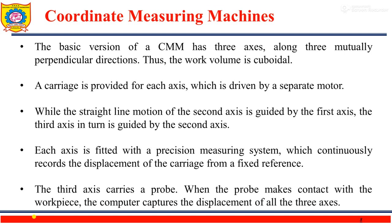The basic version of a CMM has three axes along three mutually perpendicular directions, so the work volume is cuboidal. A carriage is provided for each axis, driven by a separate motor. The straight-line motion of the second axis is guided by the first axis, and the third axis is guided by the second. Each axis is fitted with a precision measuring system that continuously records the displacement of the carriage from a fixed reference. The third axis carries the probe, generally the Z axis, and when the probe contacts the workpiece, the computer captures the displacement of all three axes.